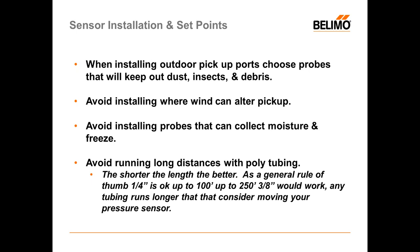That will increase your pressure readings quite a bit and throw off your measurements. Avoid installing probes where they can collect moisture and freeze — tubing running inside the building carries some heat, which can condense inside metal pickup ports, and when that moisture builds up and freezes, it blocks the port and you don't get a good reading. Also, avoid long distance runs with poly tubing. Generally, you can run quarter-inch up to 100 feet, and three-eighths inch up to 250 feet. For runs longer than 250 feet, you should really consider moving your pressure sensor.